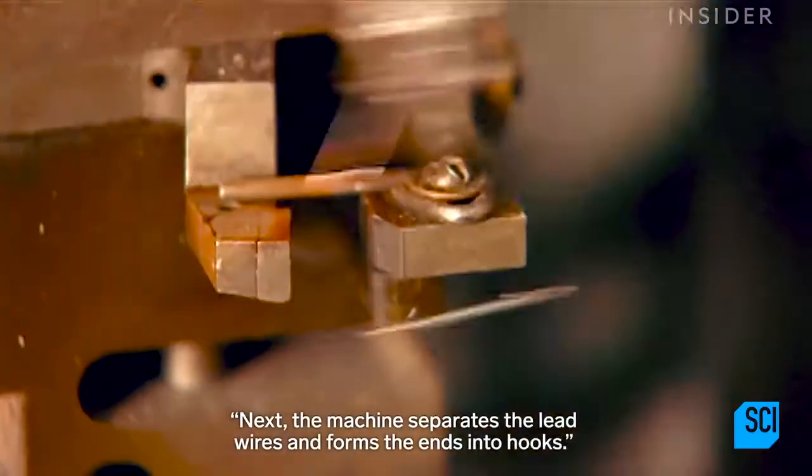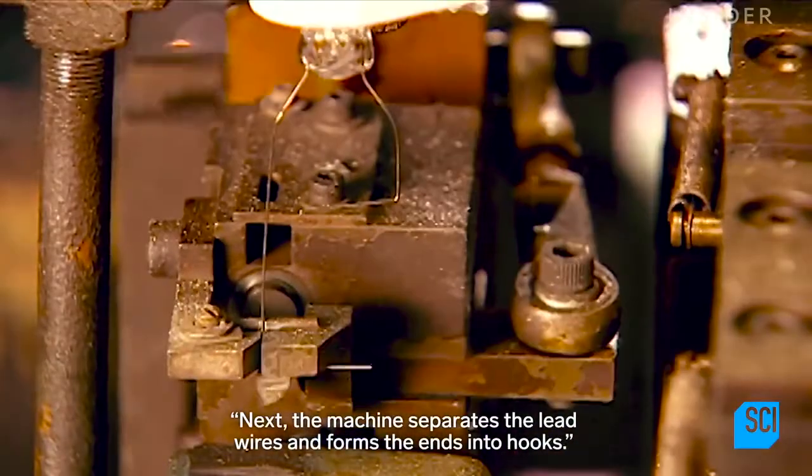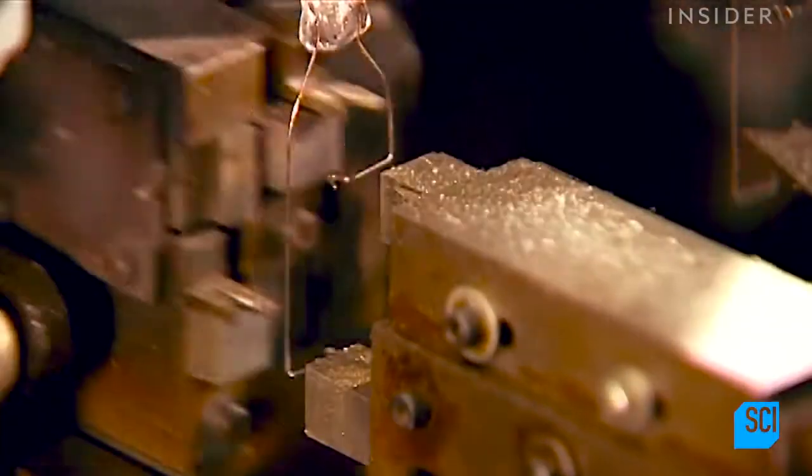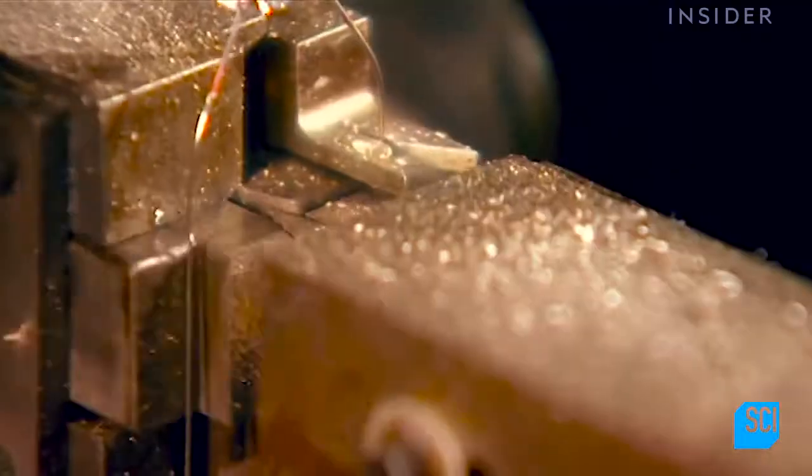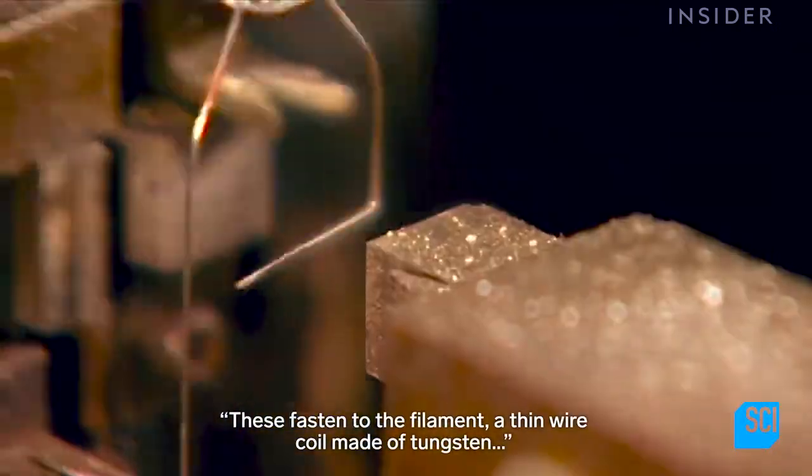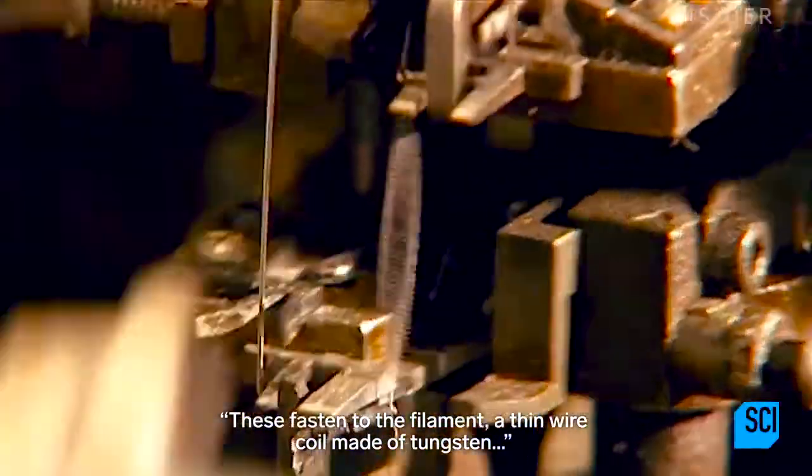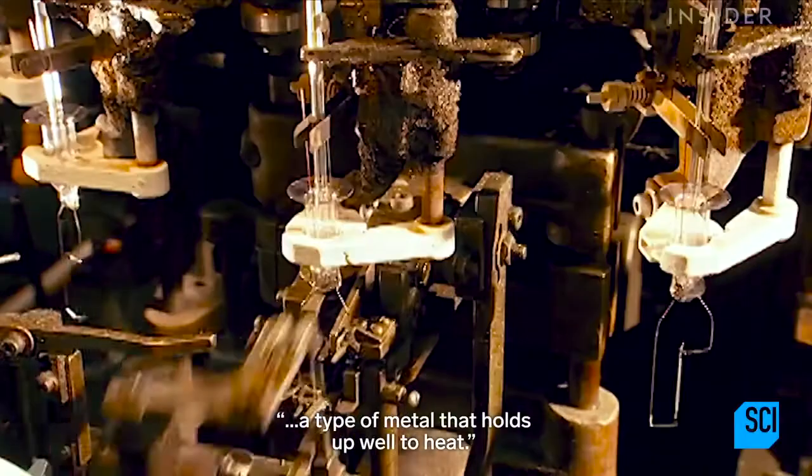Next, the machine separates the lead wires and forms the ends into hooks. These fasten to the filament, a thin wire coil made of tungsten, a type of metal that holds up well to heat.